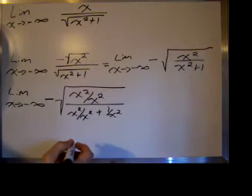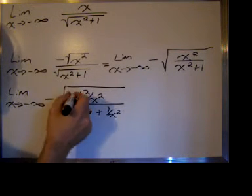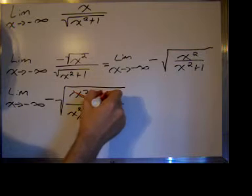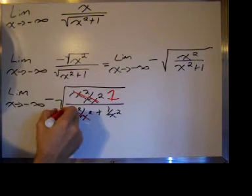We'll simplify this. x squared over x squared is, of course, one, same difference here.